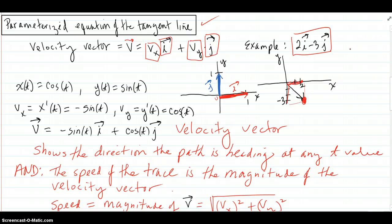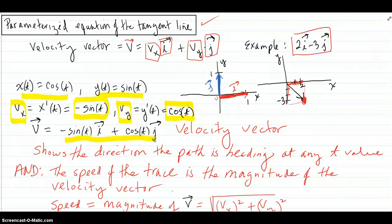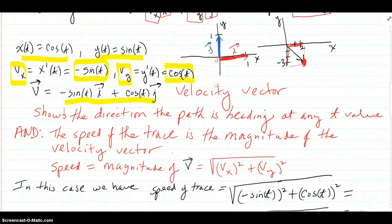For our example, x(t) equals cosine t and y equals sine t — the circle. The x-component of velocity is dx/dt, which is negative sine t. The y-component is cosine t. So the velocity vector is negative sine t times i plus cosine t times j. This shows the direction the path is heading at any t value.